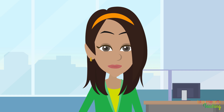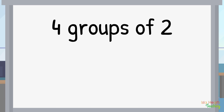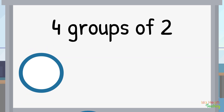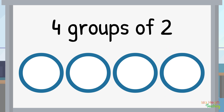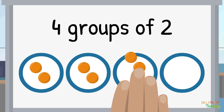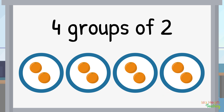So back to the question — how do we work out how many are in 4 groups of 2? The question says that there are 4 groups. Let's make 4 circles to show our 4 groups: 1 group, 2 groups, 3 groups, and 4 groups. Now, the question says there are 4 groups of 2, which means there are 2 items in each group. Let's add 2 oranges to each group: 2 in the first group, 2 in the second group, 2 in the third group, and 2 in the fourth group.